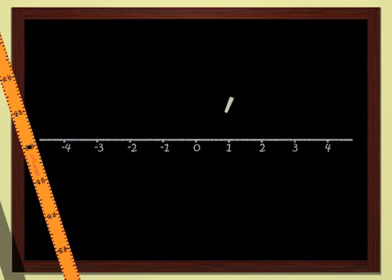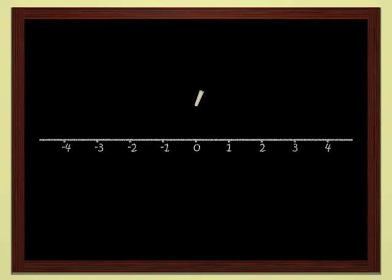Just as we can add numbers, we can add points. Here is a red point on the line and another blue one. Let's add these two points. We get the green point. One plus two equals three. When the red and blue points move, the green point, which is the sum, must move too.